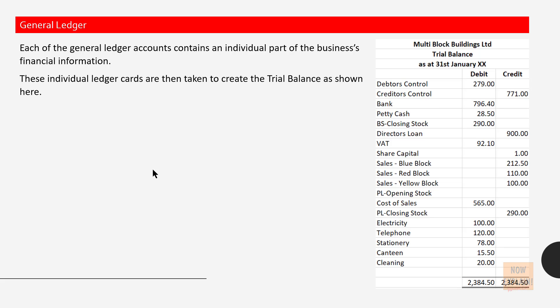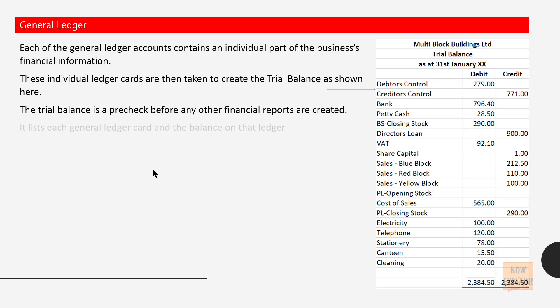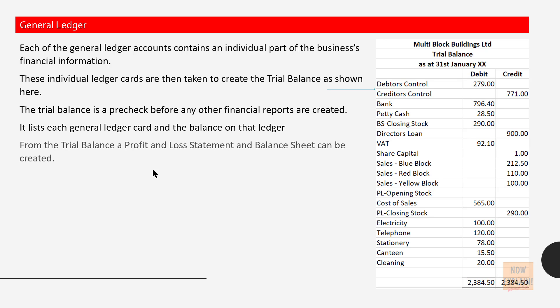These individual ledger cards are then taken to create the trial balance as shown here. The trial balance is a pre-check before any other financial reports are created. It lists each general ledger card and the balance on that ledger. From the trial balance, a profit and loss statement and balance sheet can be created.